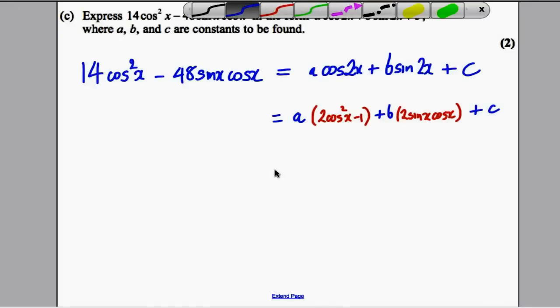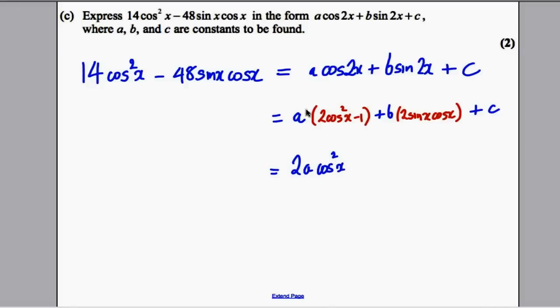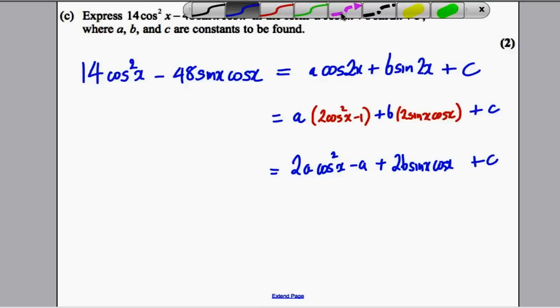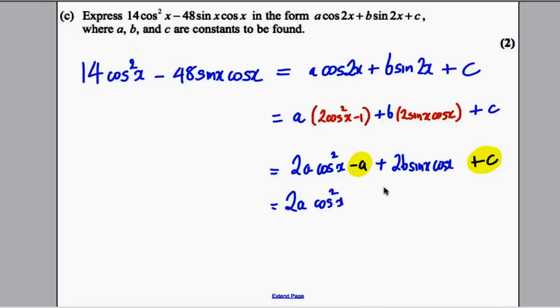Therefore, we would have 2Acos²x - A + 2Bsinxcosx + C. Just one more line: that -A and that +C are just numbers, so let's combine them. We have 2Acos²x + 2Bsinxcosx + C - A.